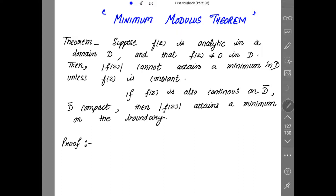Suppose F(z) is analytic in a domain D and that F(z) is non-zero in D. Then |F(z)| cannot attain a minimum in D unless F(z) is constant — which means |F(z)| attains a minimum in D if and only if F(z) is constant. Then, if F(z) is also continuous on D̄ (the closure of D), and D̄ is compact, then |F(z)| attains a minimum on the boundary.